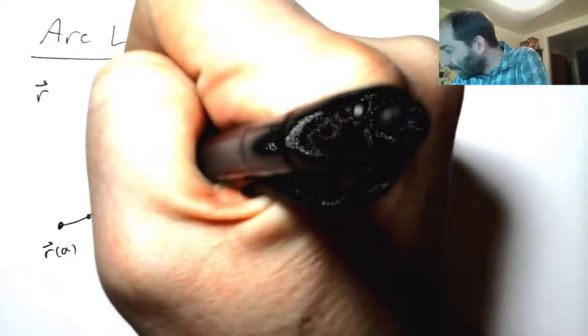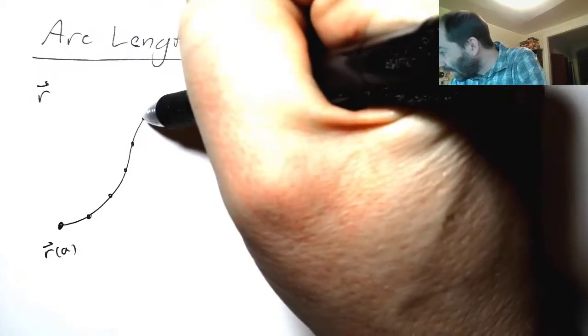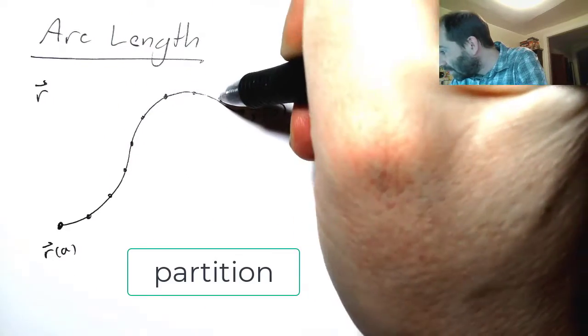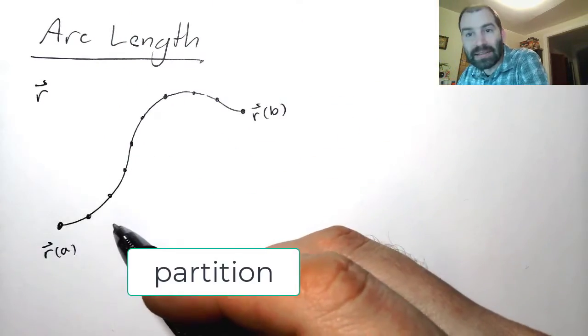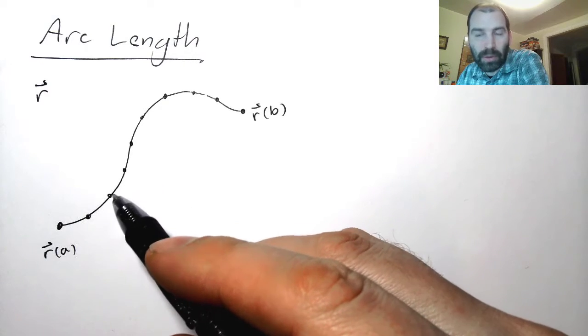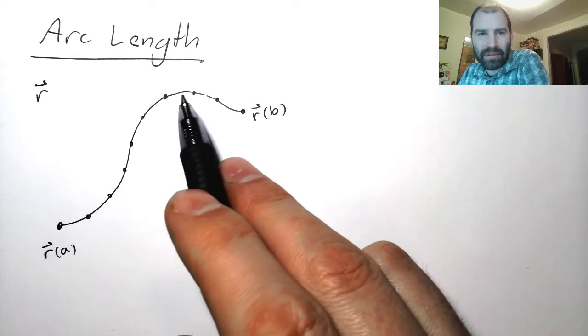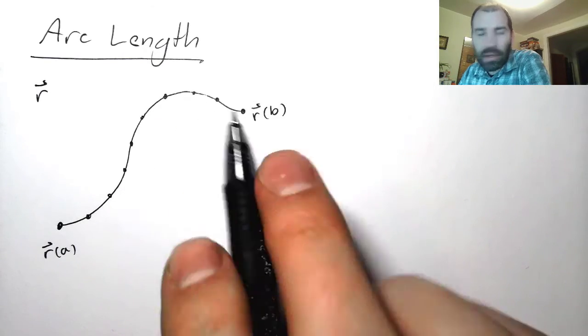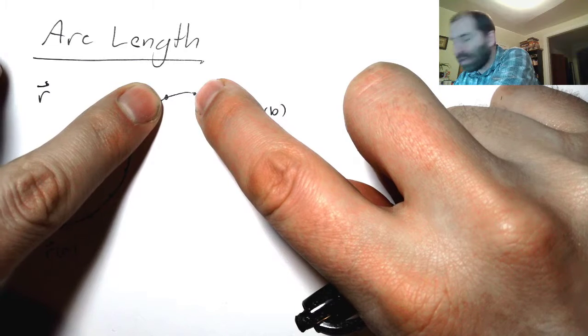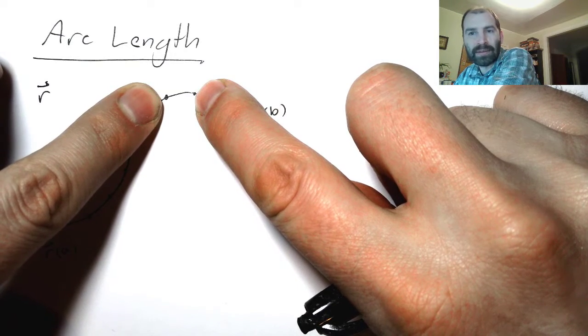But if I subdivide this, and the mathematical term for that is to partition it into little pieces, I could hold the ruler against each one of these pieces and get a reasonably accurate approximation. The more I subdivide this smooth curve,